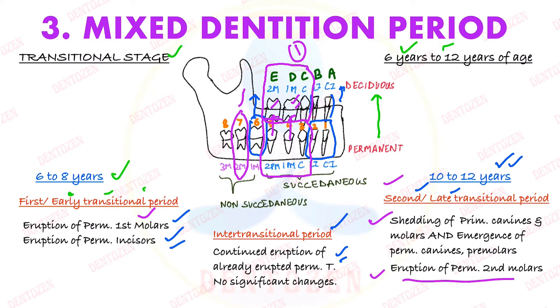What about the third molars? They erupt much later. For now, let's see that the mixed dentition period is further divided into three stages, and we are going to discuss each period in detail.